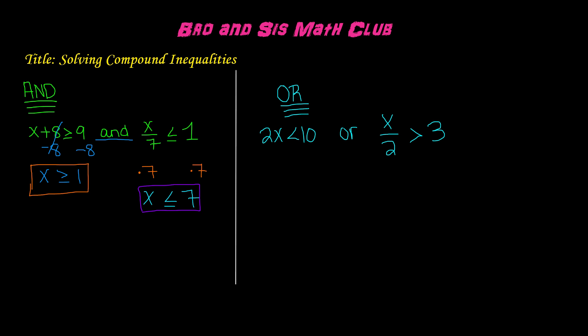Now to find the solution to the compound inequality, we must graph. Let's go ahead and make our number line. Remember that the positive numbers go on the right side of the number line and the negative numbers go on the left. Now that we have our number line labeled, let's go ahead and plot the points.